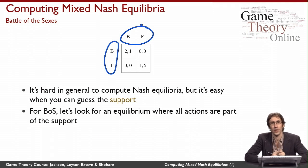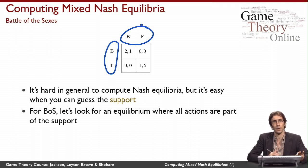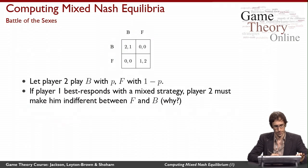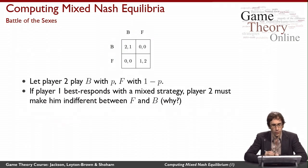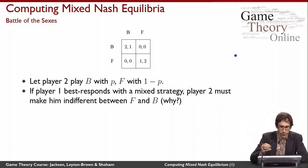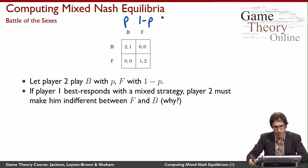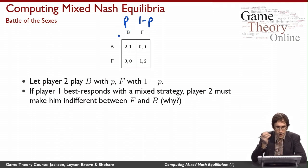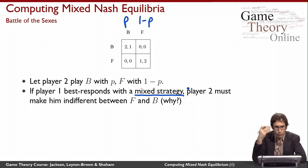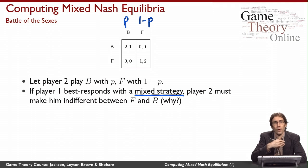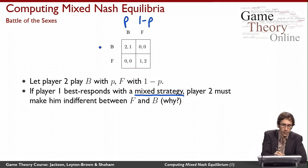Intuitively, if there's going to be a mixed strategy equilibrium of this game, that looks like what it should be. So let's guess that that's the support and then try to reason about what the equilibrium would have to be given that support. Let's introduce some notation: let player two play B with probability P and F with probability 1 minus P. Now if player one is going to best respond to this mixed strategy and be playing a mixed strategy in response, then player two must have set P and 1 minus P in a way that makes player one indifferent between his own actions, B and F.